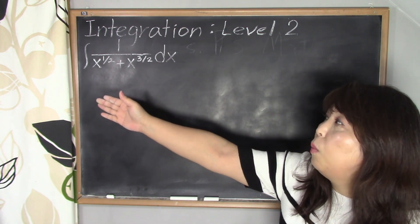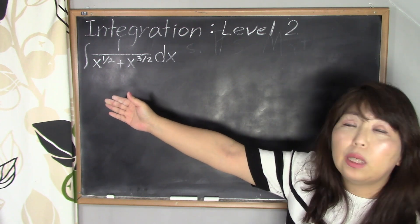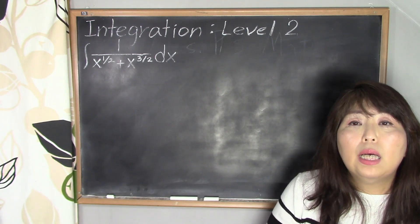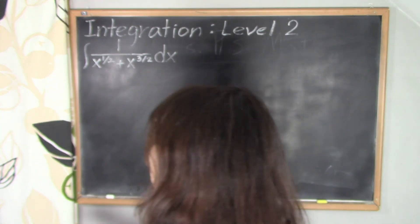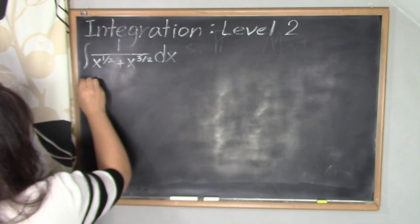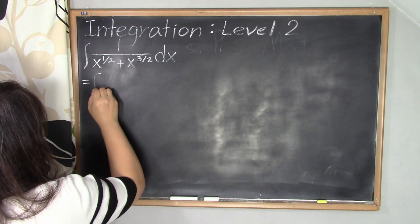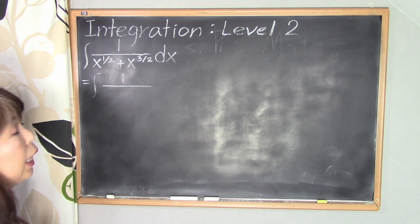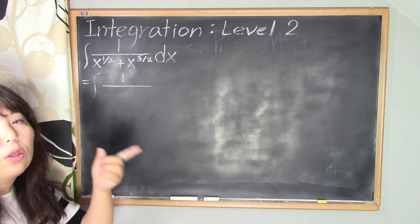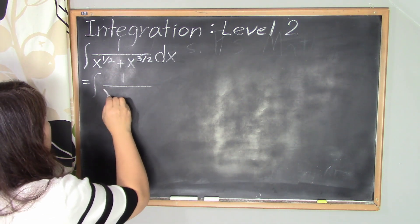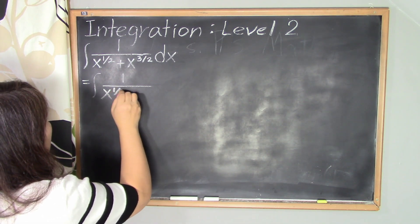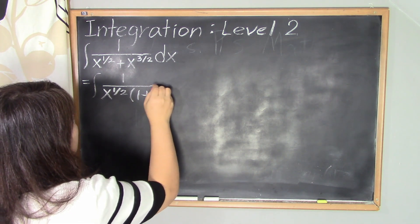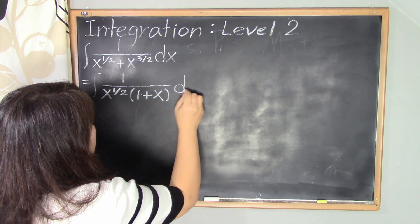Integral of 1 over x to the 1/2 plus x to the 3/2 dx. So first of all, we're going to change the denominator. This is equal to integral of 1 over, so I'm going to factor the denominator by x to the 1/2, x to the 1/2 times 1 plus x dx.